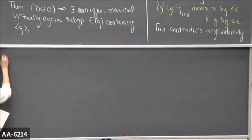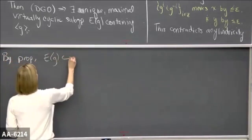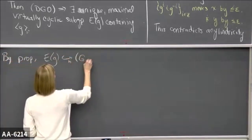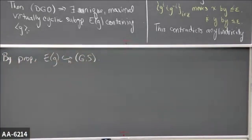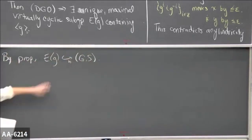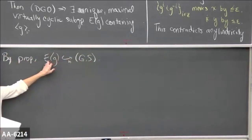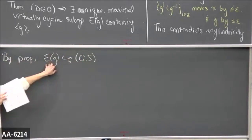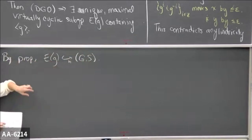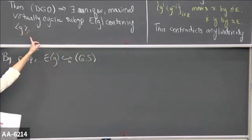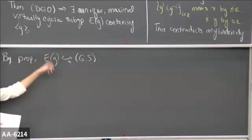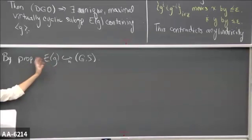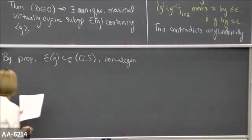By the proposition (minus details), we have a hyperbolically embedded subgroup. And it's non-degenerate: non-degenerate means it is an infinite subgroup that is also not equal to the group. It's infinite because it contains an infinite cyclic subgroup. It's not equal to the group because since the group is acylindrically hyperbolic, it is not virtually cyclic by definition — and this subgroup is virtually cyclic.